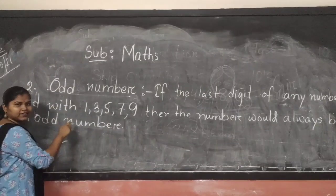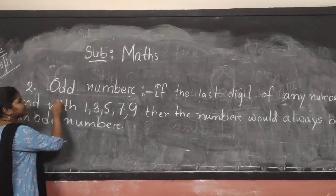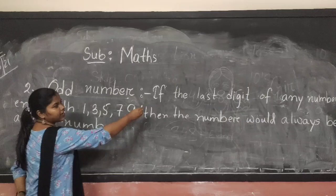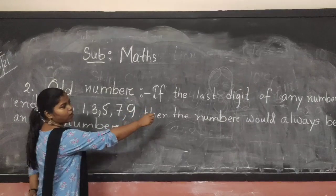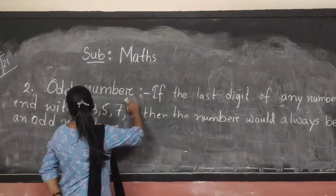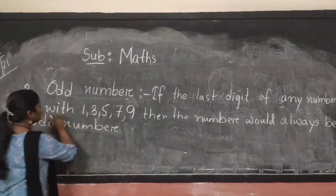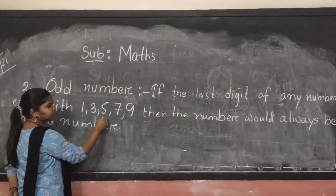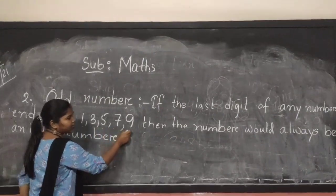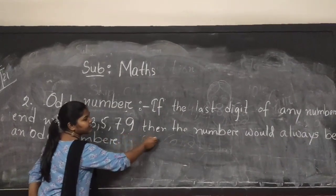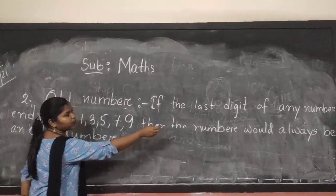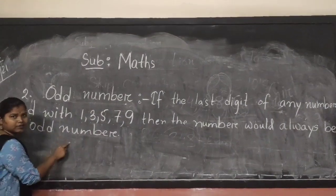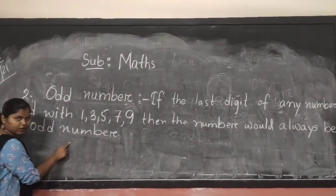Now, we will discuss what is an odd number. If the last visit of any number ends with 1, 3, 5, 7, 9 then the number would always be an event number.